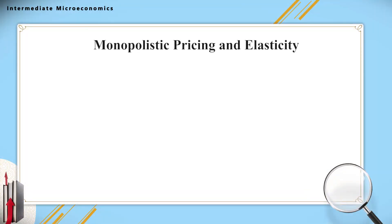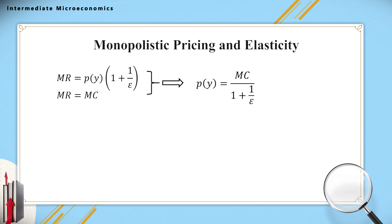In the lectures of consumer theory, we talked about the relationship between firms' marginal revenue and the price elasticity of demand — that is, MR equal to P times (1 plus 1 over epsilon). This is obtained by taking the partial derivative of the total revenue function with respect to output level. The profit maximization requires the producer's output decision to satisfy MR equal to MC. Applying this condition to monopoly producers, we obtain: P equal to MC divided by (1 plus 1 over epsilon). The monopoly firm is the only supplier of the market, so the elasticity epsilon here is the price elasticity of market demand.